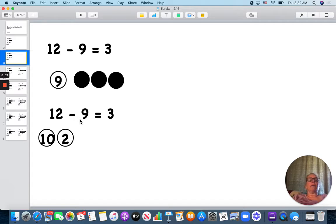Here is my other way of doing it. I have 12. 12 is 10 and 2. I know that if I have 10 and I take away 9, I have 1 left. So 2 and 1 more is 3.